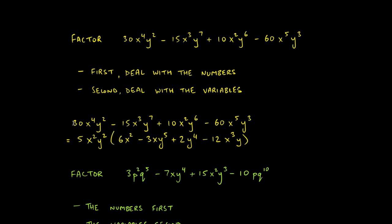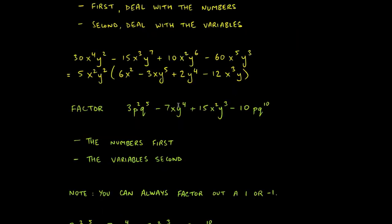So our GCF is 5x²y², and the moment we write it down we open parentheses. To find what goes inside, divide each original term by the GCF: 30 ÷ 5 = 6, x⁴ ÷ x² = x², y² ÷ y² = 1 (no y left). Next term: −15 ÷ 5 = −3, x³ ÷ x² = x, y⁷ ÷ y² = y⁵. Fill in the remaining two terms similarly.